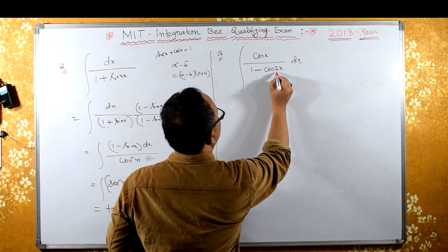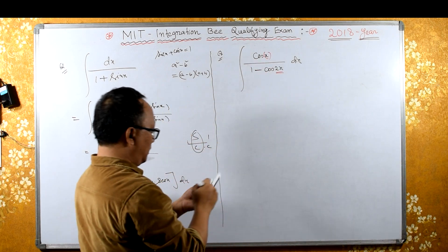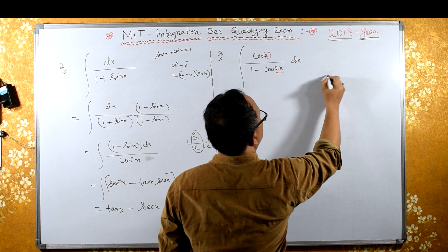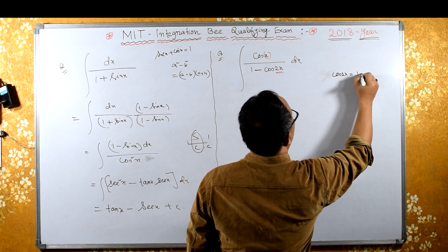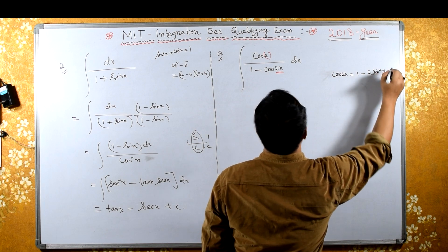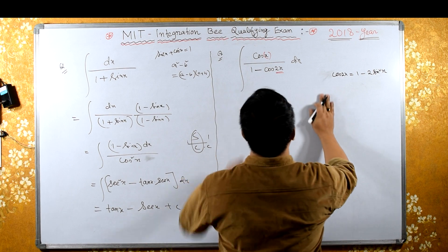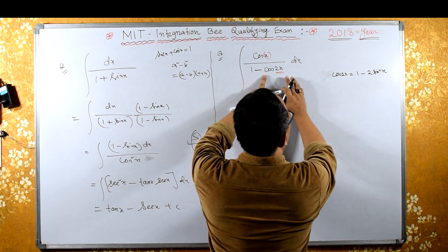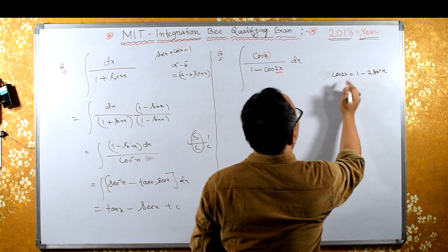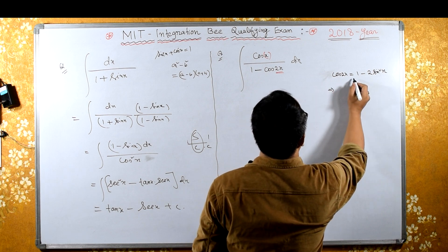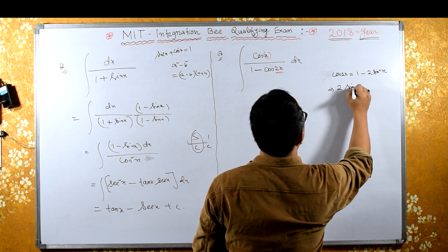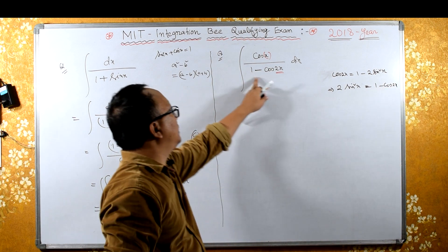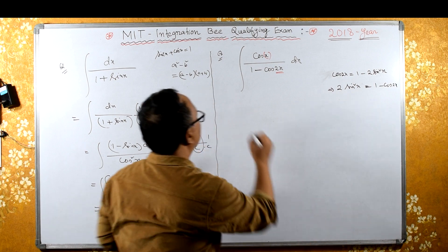For the second problem, note that the angles are different — we have twice x here and x there. Recall that cos(2x) = 1 - 2sin²x, which gives us 2sin²x = 1 - cos(2x). We use this formula to substitute instead of 1 - cos(2x).